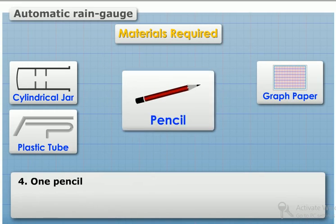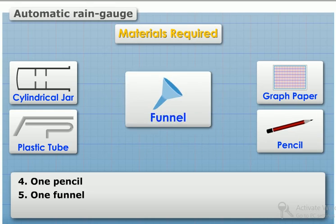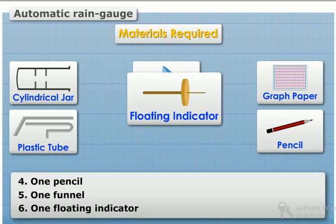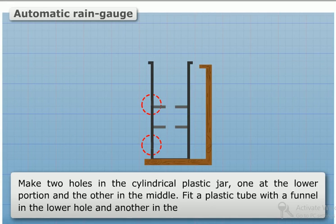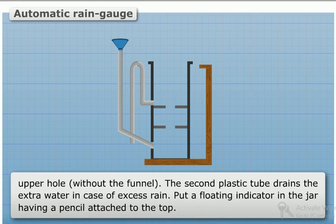One pencil, one funnel, and one floating indicator. Method: Make two holes in the cylindrical plastic jar, one at the lower portion and the other in the middle. Fit a plastic tube with a funnel in the lower hole and another in the upper hole without the funnel. The second plastic tube drains the extra water in case of excess rain.